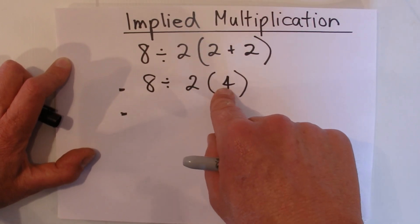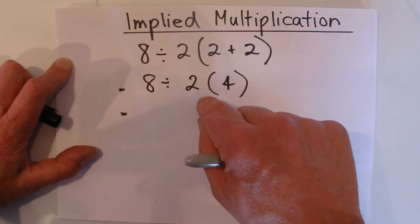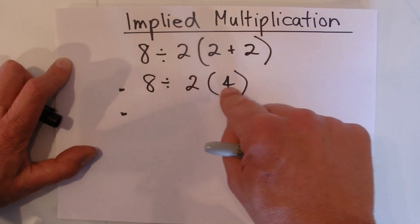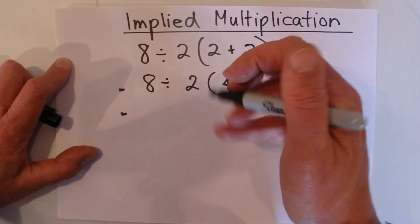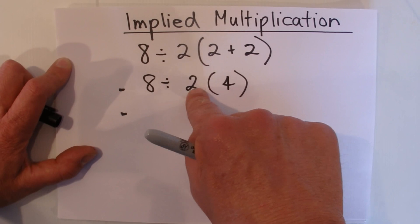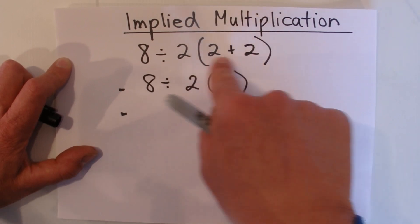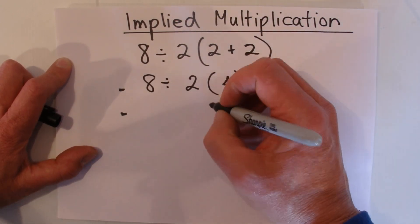And then the second step: we've got the Implied Multiplication, which takes a higher precedence to division. So we've got to do that part first because there's no multiplication sign. The 2 is next to the brackets, so that's implied that you multiply the 2 by...